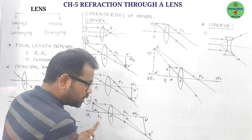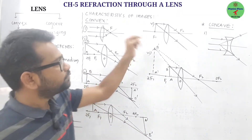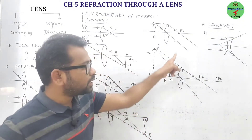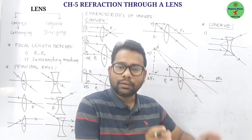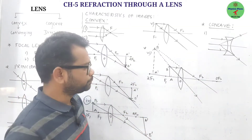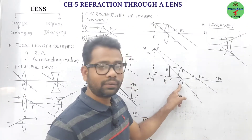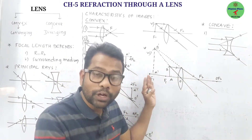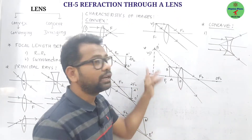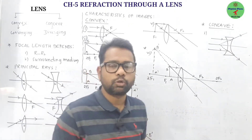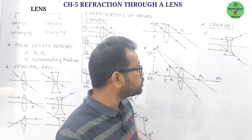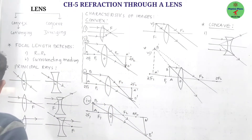When the object is placed between 2F₁ and F₁, the image forms beyond 2F₂ — real, inverted, and enlarged. When at focus F₁, the refracted rays are parallel and the image forms at infinity — real, inverted, and highly magnified. When placed between the focus and optic center, the image forms on the same side as the object — virtual, erect, and enlarged. This sixth case is used as a simple microscope or reading glass, and also to overcome hypermetropia.